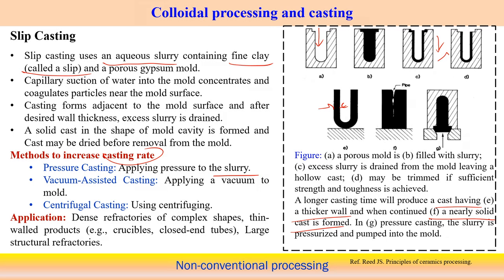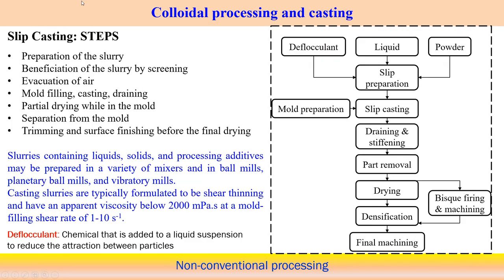Applications of slip casting include dense refractories of very complex shape, thin-wall products such as crucibles and closed-end tubes, and large structural refractories. The process steps are: preparation of the slurry, verification of the slurry by screening for homogeneous mixing, evacuation of air from the mixture, mold filling and casting, and draining of excess slurry from the mold.